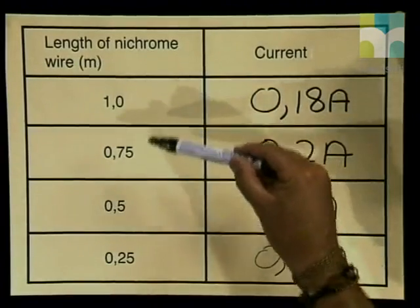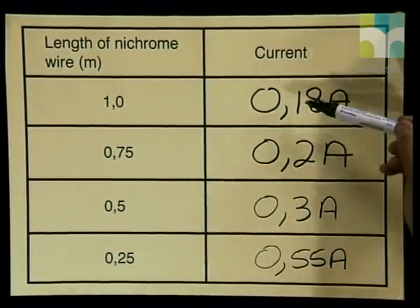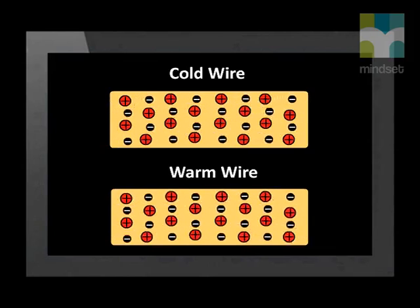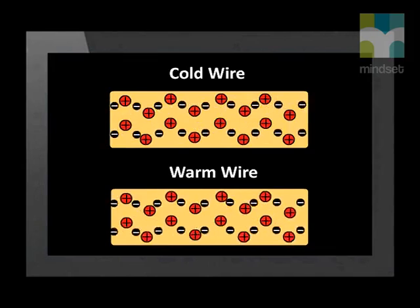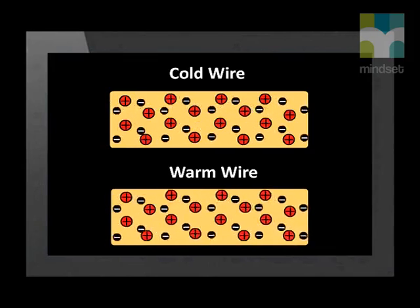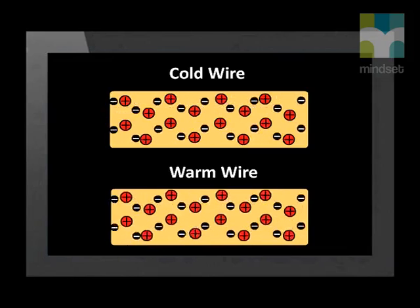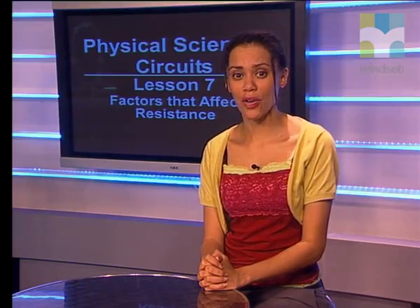So what can we conclude from these results? As the length of nichrome wire gets smaller, the current reading is actually increasing. We can therefore see that the longer the conductor, the greater the resistance. Now there is one more factor that affects resistance: temperature. When the wire is heated, all the particles gain kinetic energy and start to vibrate faster. These particles get in the way of the electrons as they try to flow through the wire and slow them down, meaning the current will be lower — or we can say that the resistance will increase when the wire is heated.